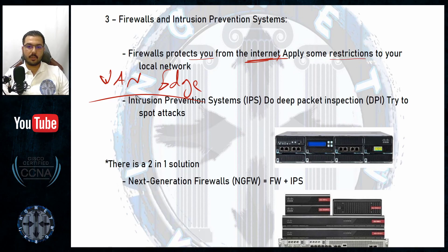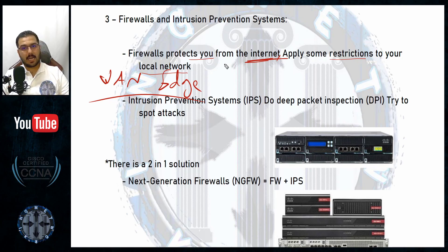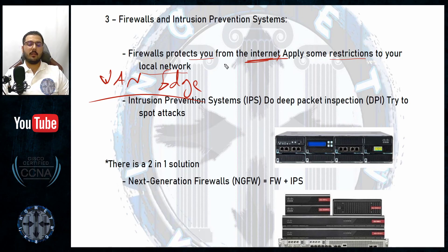Firewalls protect you from the internet by applying some restrictions to your local network — by not allowing everything to enter, by inspecting packets or data coming from the internet: what it is, where it's coming from, where it's going, whom it's destined to, what's inside it, the type of data, destination, source, and so on. It inspects many layers and in the end decides to proceed or discard. This is how a firewall works.